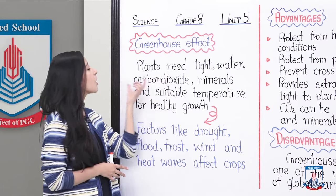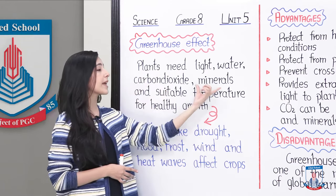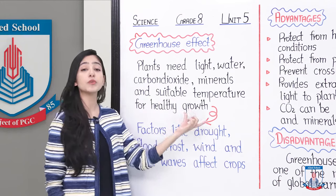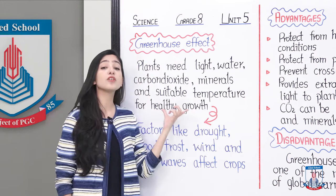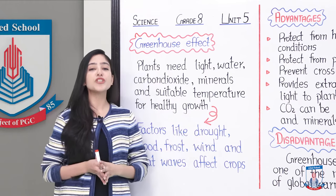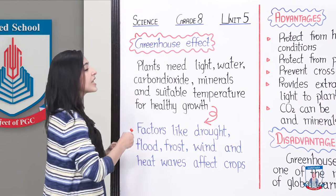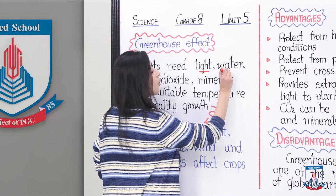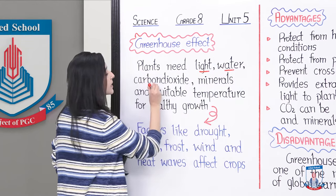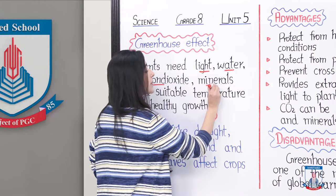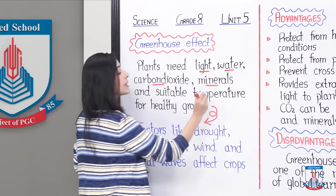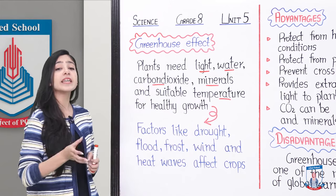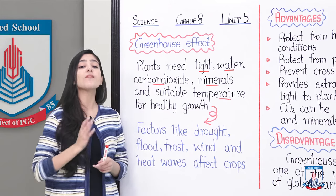Plants need light, water, carbon dioxide, minerals, and suitable temperature for healthy growth. If plants need healthy growth, they need all these things: light, water, carbon dioxide, minerals, and suitable temperature.